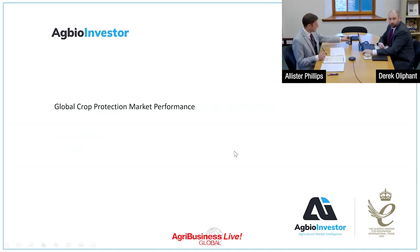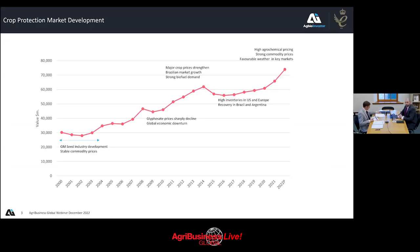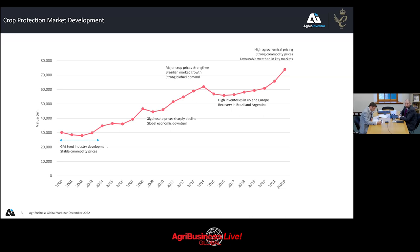Derek will start the presentation with the global crop protection market performance, focusing on what we think the situation will be as we move through to 2023. 2022 was a very unusual year in the crop protection industry. Looking back over two decades, the market has been steadily increasing with a few periods of peaks and troughs. Low commodity prices or low glyphosate prices tend to weaken the market, as do high inventories, which put pressure on product pricing through the distribution channels.